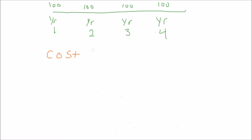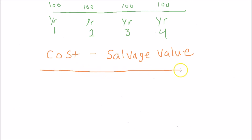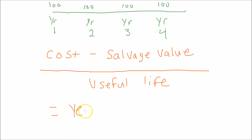We'll talk more about that when we practice a problem. You take that cost, then subtract what they call salvage value — that basically means the trade-in value. Whatever that asset is worth at the end of its life, you can trade it in for that amount; that's called your salvage or residual value. Then you divide by useful life — however long you can use that fixed asset — and that gives you your yearly depreciation expense.